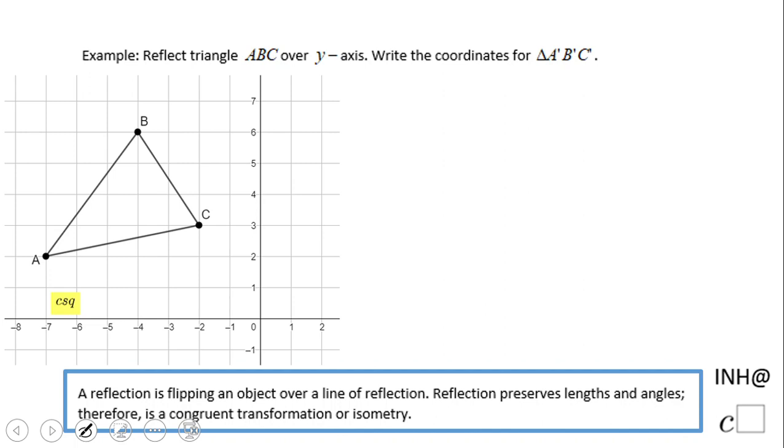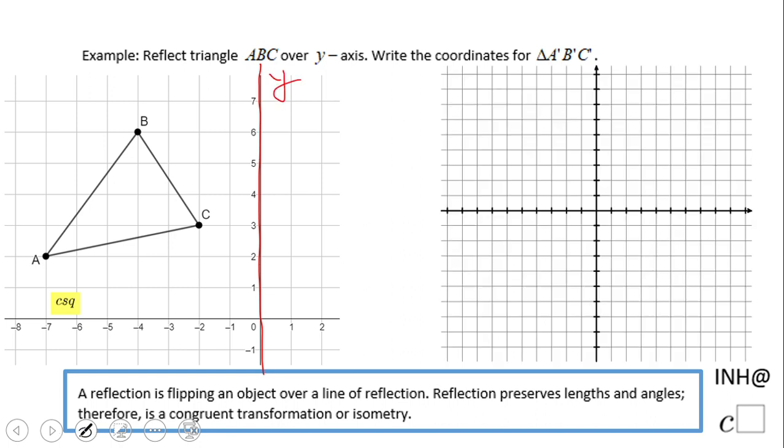Welcome to C Squared. In this problem we need to reflect triangle ABC over the y-axis. The y-axis is this line here. How are we going to do that? Let's start with the first point C, which is at (-2, 3).